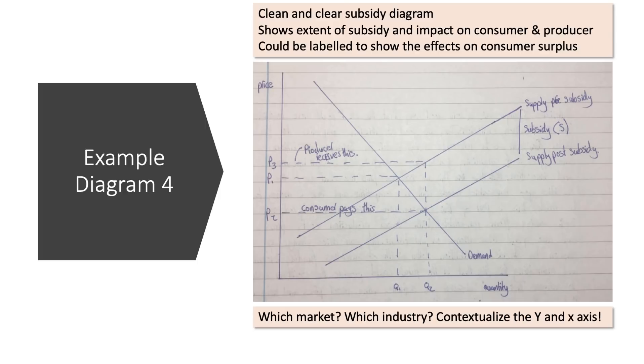Again, it's not contextualised. Price of what? Quantity of what? Contextualise the x and the y-axis. And I think to improve this diagram, you would label or show very clearly the effect on consumer surplus, for example. So extend that demand curve up to the y-axis so you can show the impact of a subsidy on consumer surplus. Extend the supply curve to the y-axis so you can show the impact on producer surplus. This is a decent diagram, but again, it could be improved. With very small steps, small incremental improvements, we can get to a higher level of analysis.